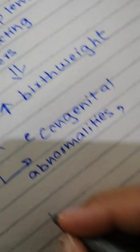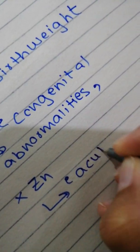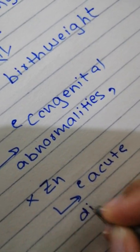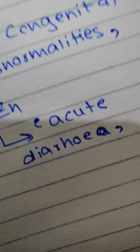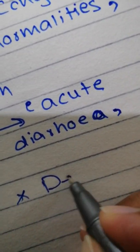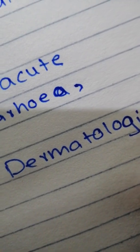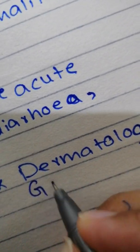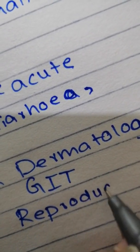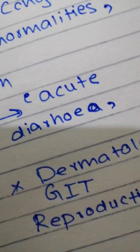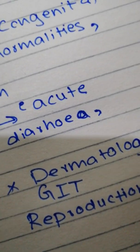Children and infants are given zinc during acute diarrhea, and it is believed to help out. Zinc has to do with dermatology, proper GIT functioning, and proper reproductive functioning. In fact, it has to do with proper spermatogenesis and proper embryonic development.